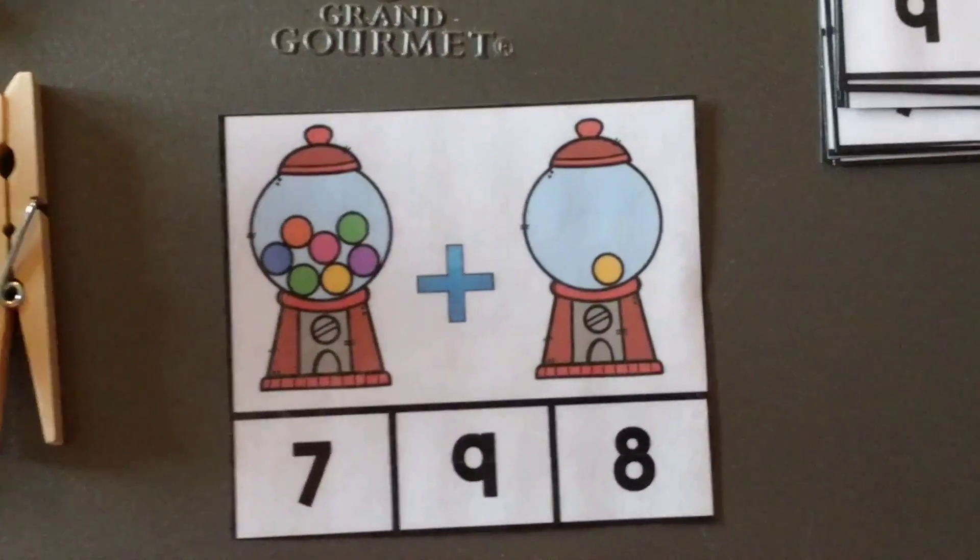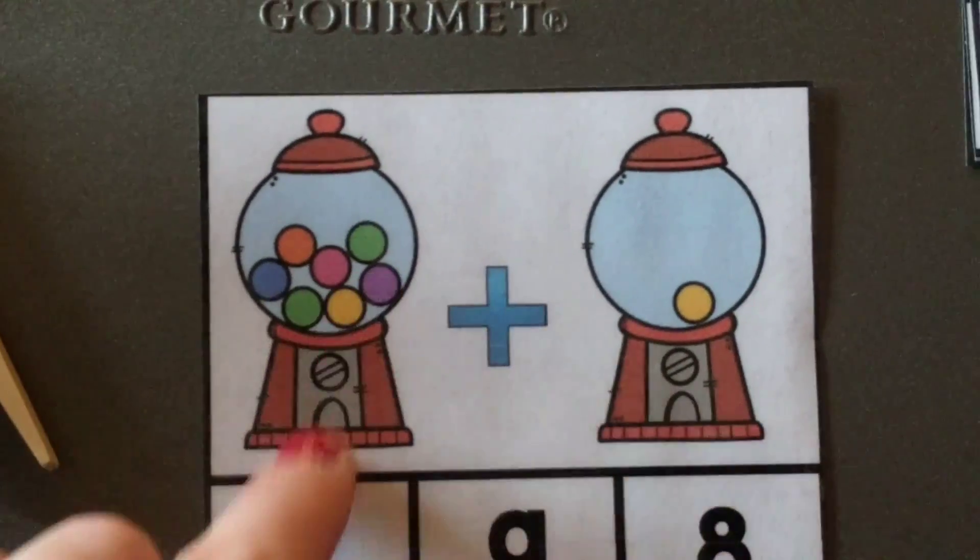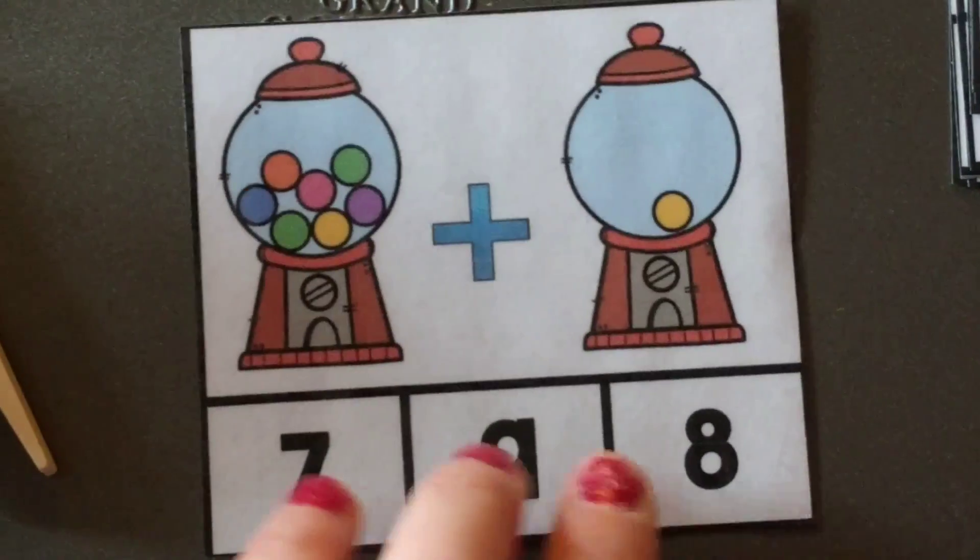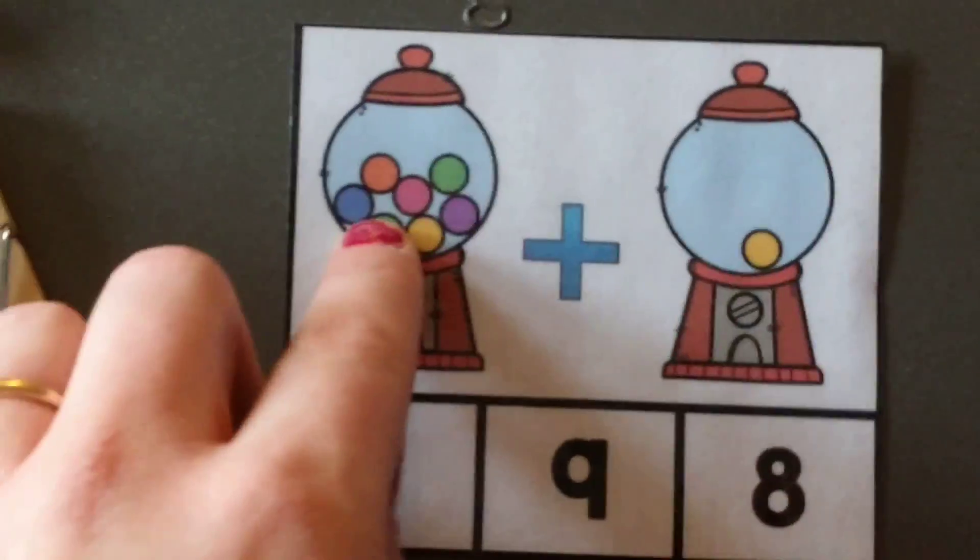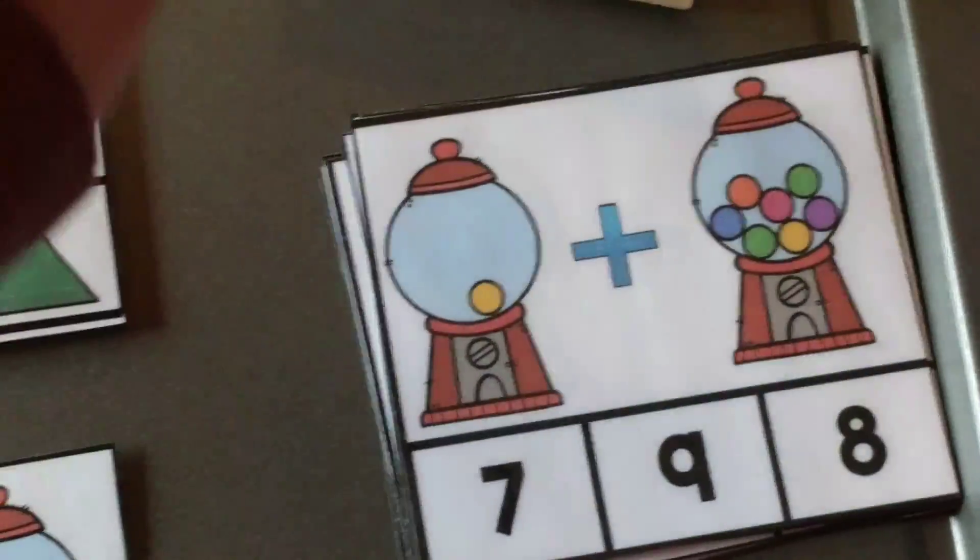So he will count the gumballs. So basically right here we see one, two, three, four, five, six, seven, plus one equals, and then he will have to count seven, eight.